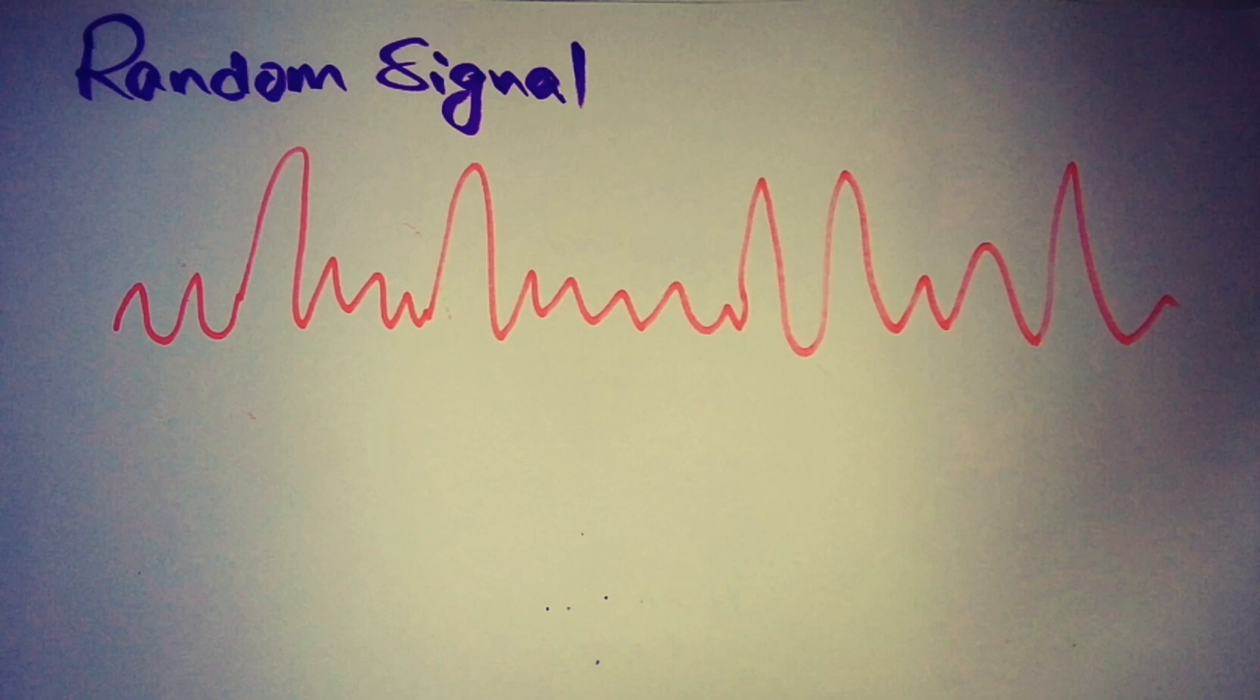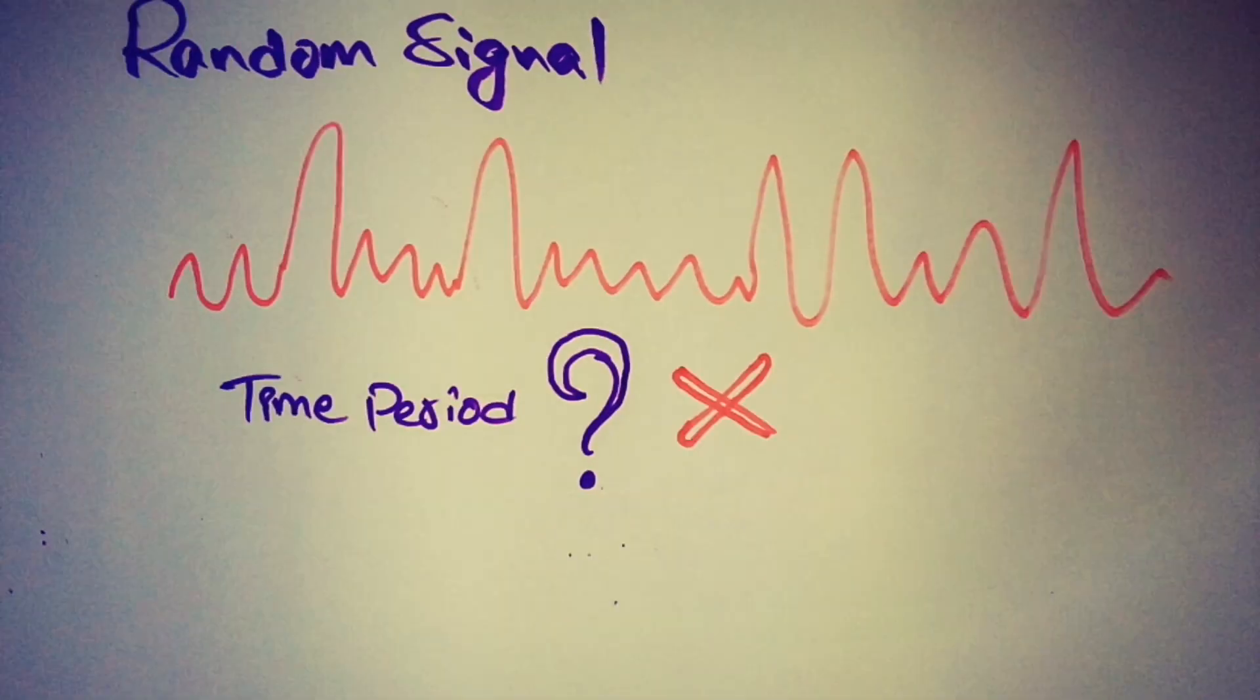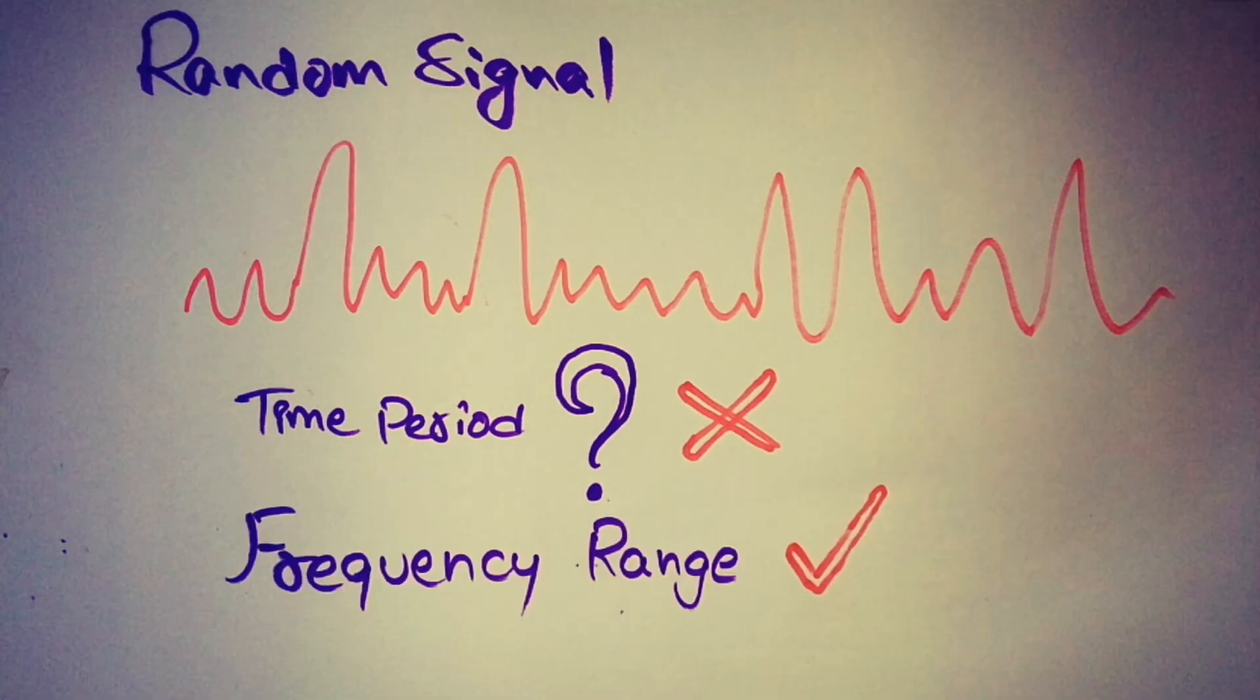Now if you take a random signal, does it have a time period? No, the time period cannot be defined for a random signal as it doesn't have any repeating event. Whereas it has a frequency range - like our audio signals are non-periodic but still we have a frequency range.